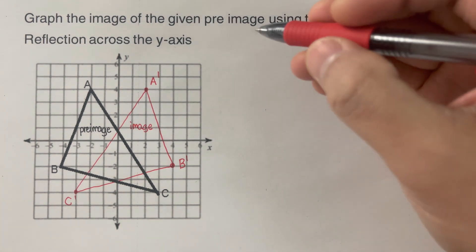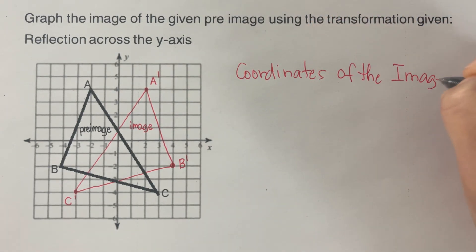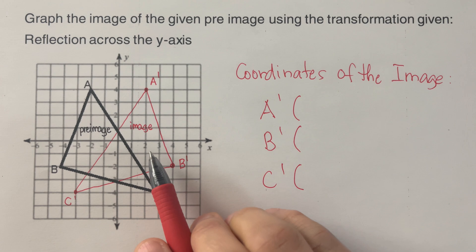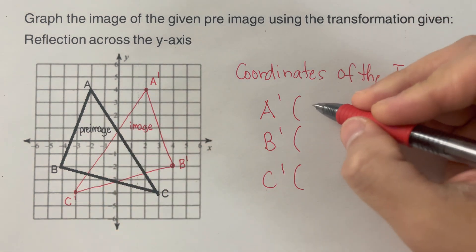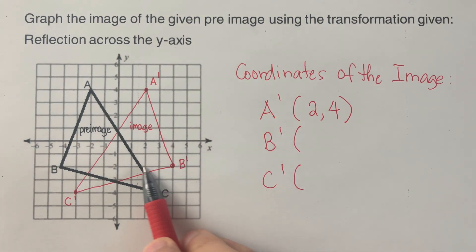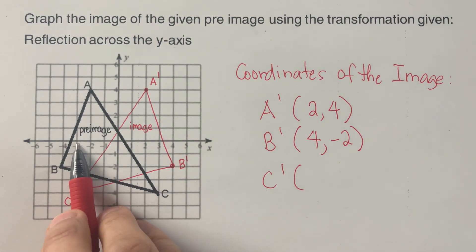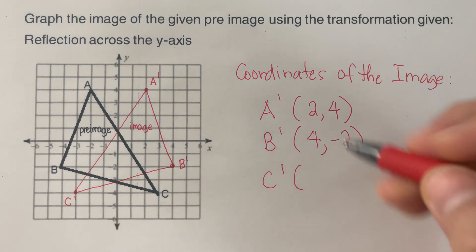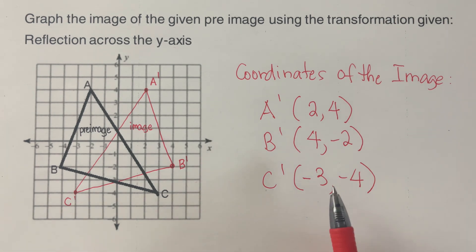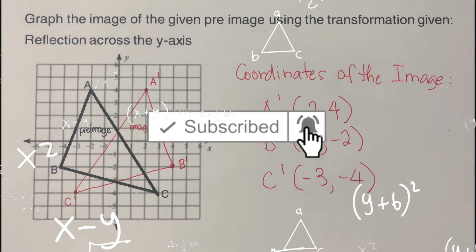Now let's look at the vertices of the image. A prime is located at (2, 4), B prime is located at (4, -2), and C prime is located at (-3, -4). Did you get the same answer? If you find this video helpful, hit like and subscribe for more math videos!